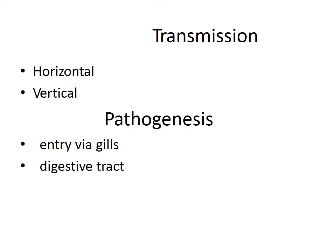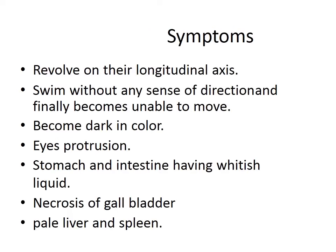Transmission of IPN occurs both horizontally and vertically. Pathogenesis usually involves entry via gills and digestive tract. Control measures: there is no effective control measure. Providing optimum food and maintaining a hygienic environment is recommended, as this increases the fish's immunoresistance.